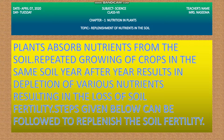What do we study in photosynthesis? We have studied that water and minerals are taken from the soil. So the nutrients from the soil are gained from the soil. Repeated growing of crops in the same soil year after year results in depletion of various nutrients, resulting in the loss of soil fertility.